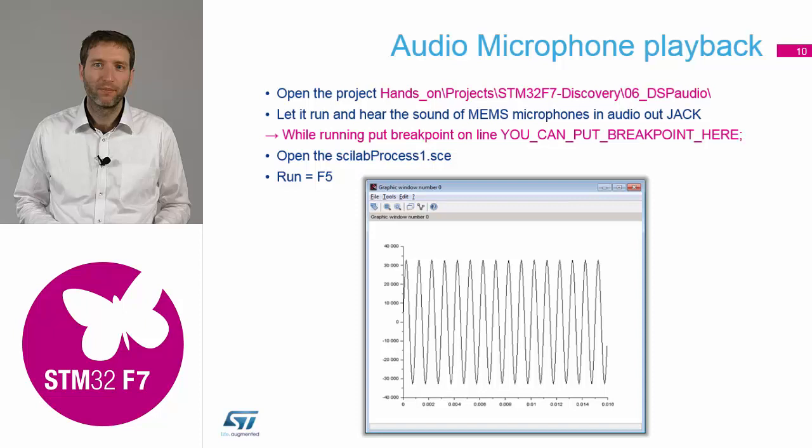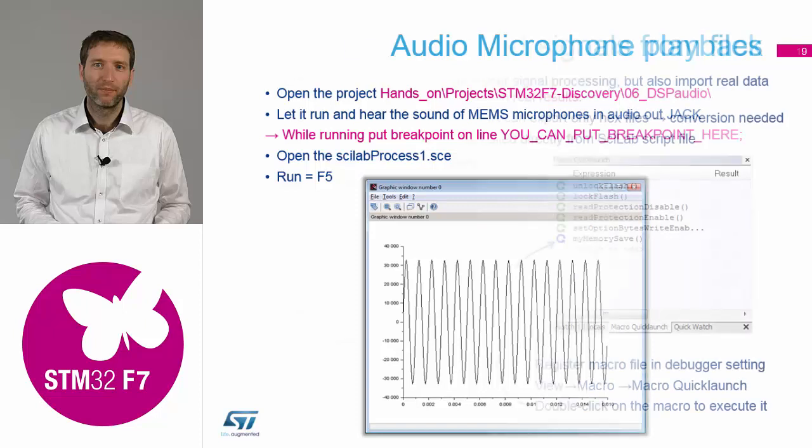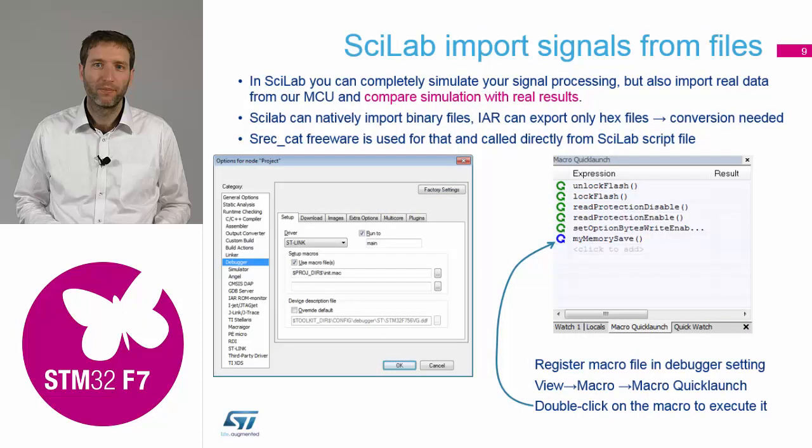We let the code run in an endless loop waiting for the interrupt. When the buffer is full, we put a breakpoint and we are sure that at that moment we have one buffer filled in memory. We can then export it from the IDE and load it into Scilab. Exporting is usually possible through hex files, binary files, or CSV. In our IDE we have prepared a macro called 'my memory save' in the macro quick launch — double-clicking the blue arrow will output the data.